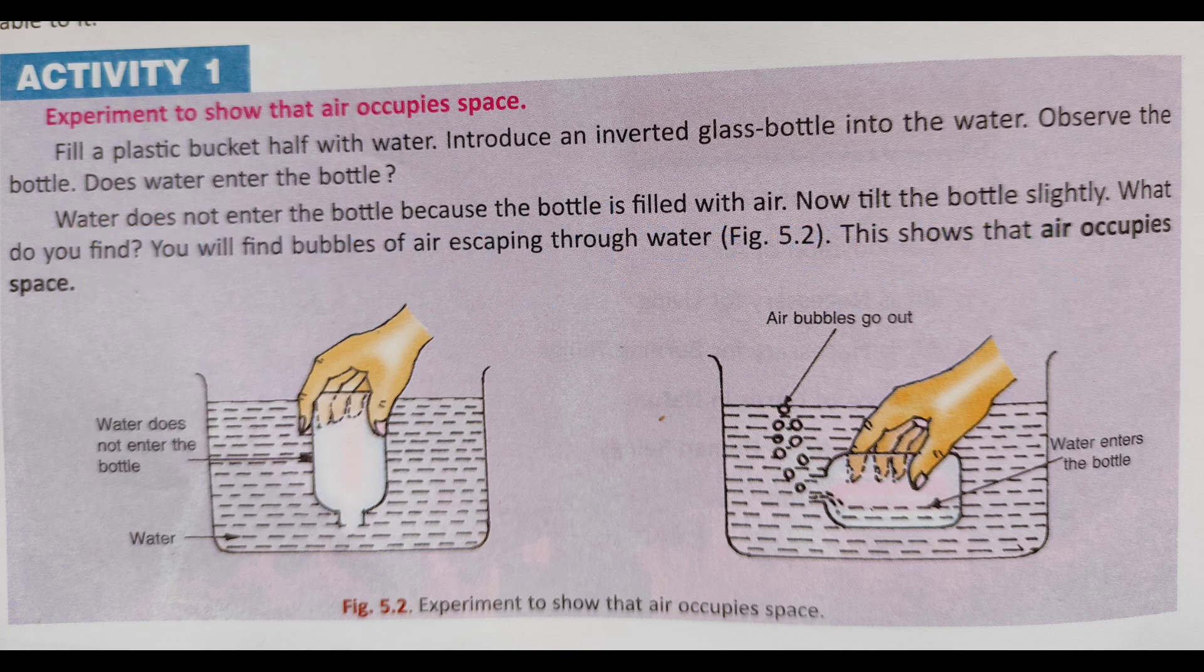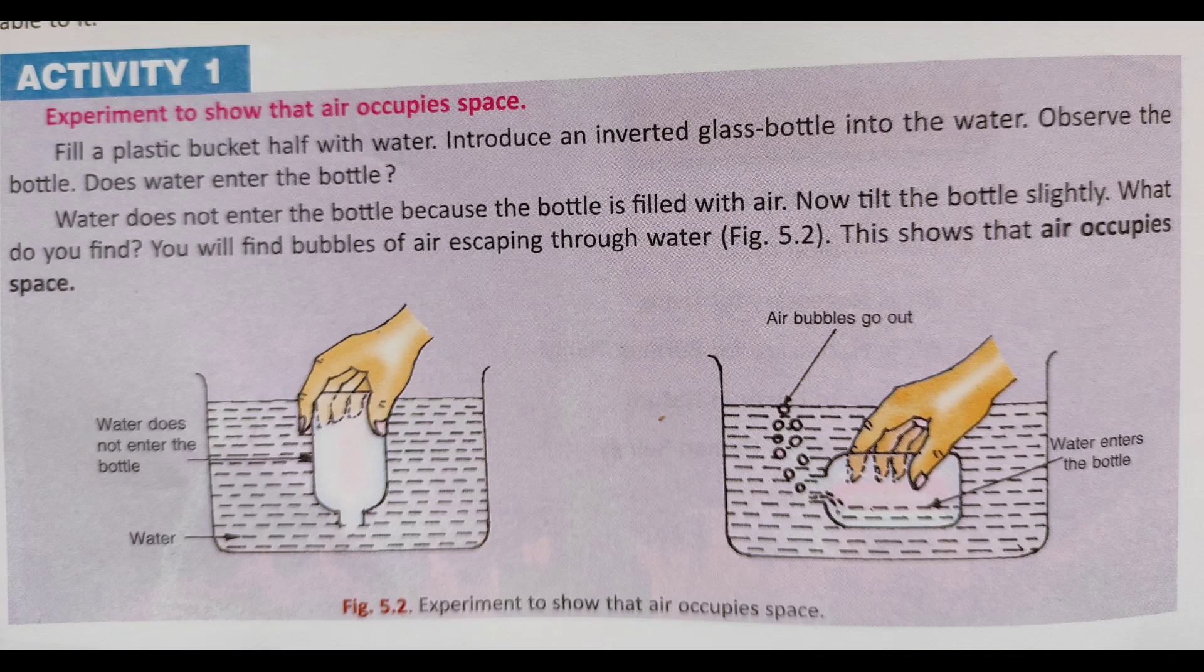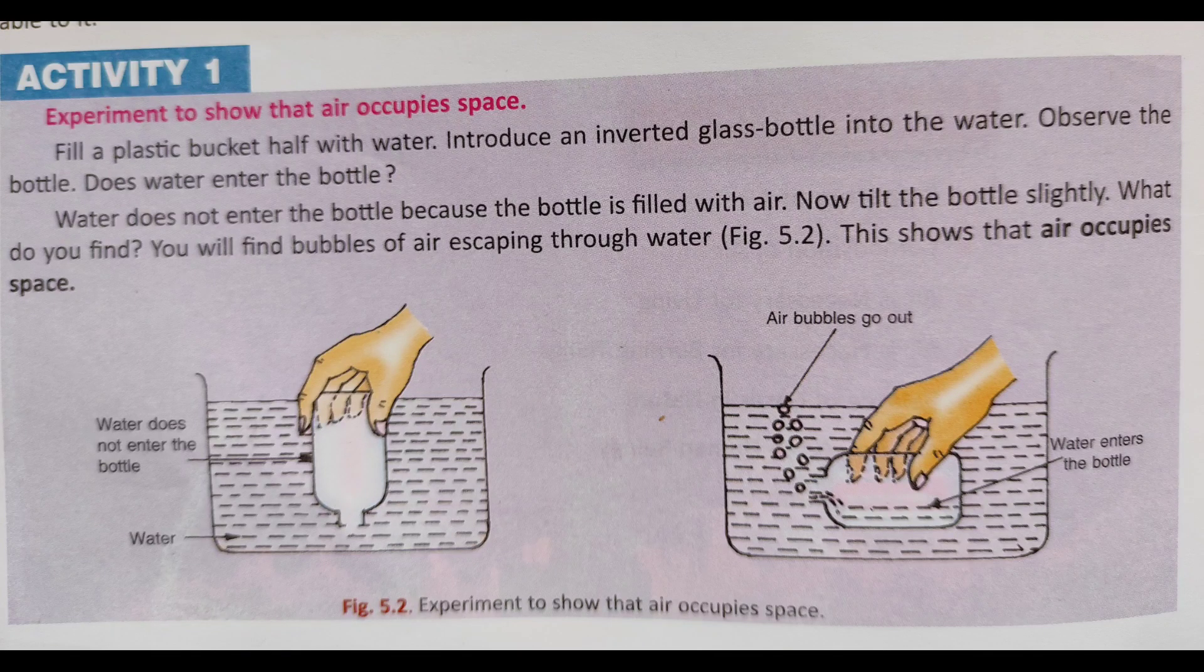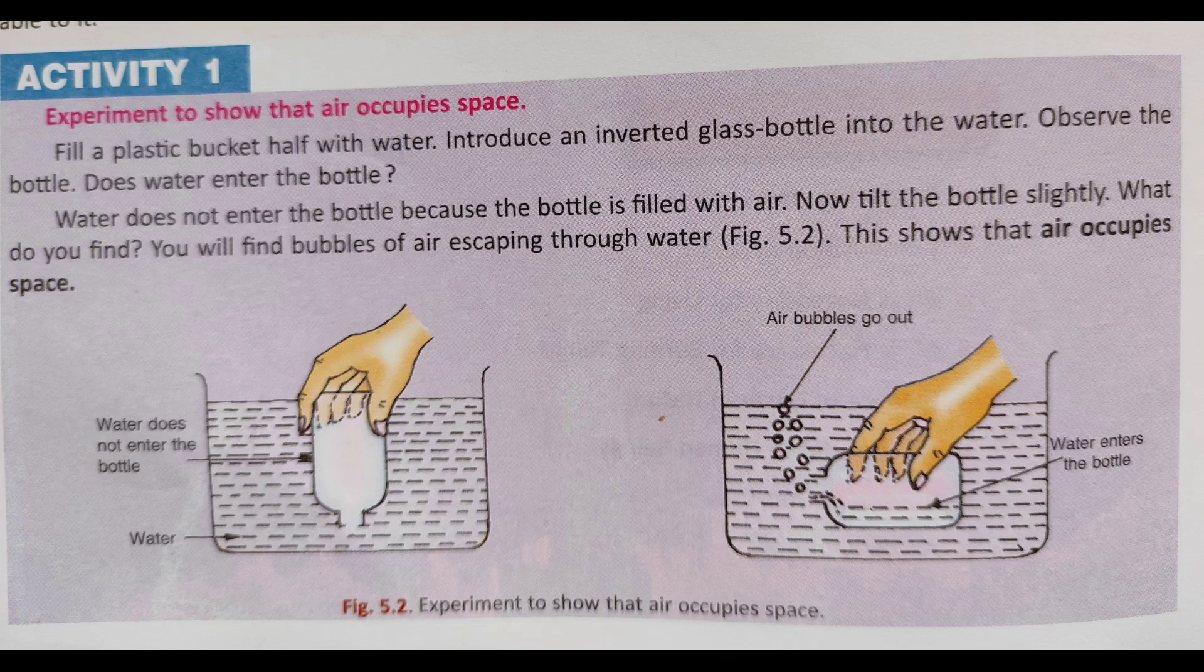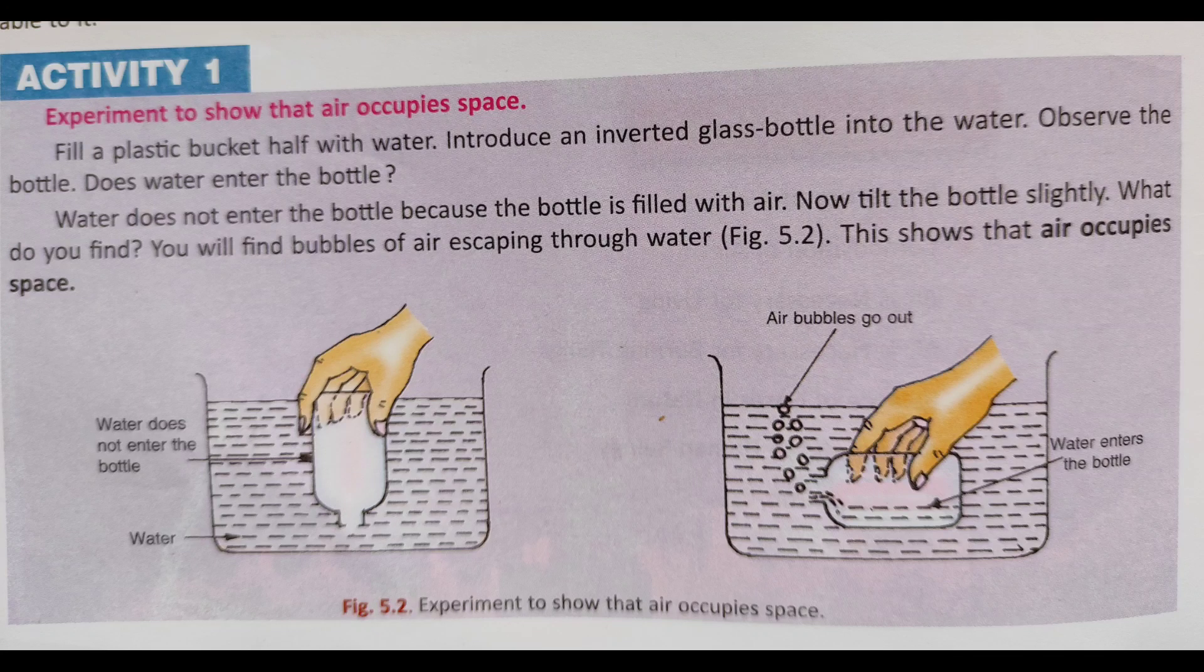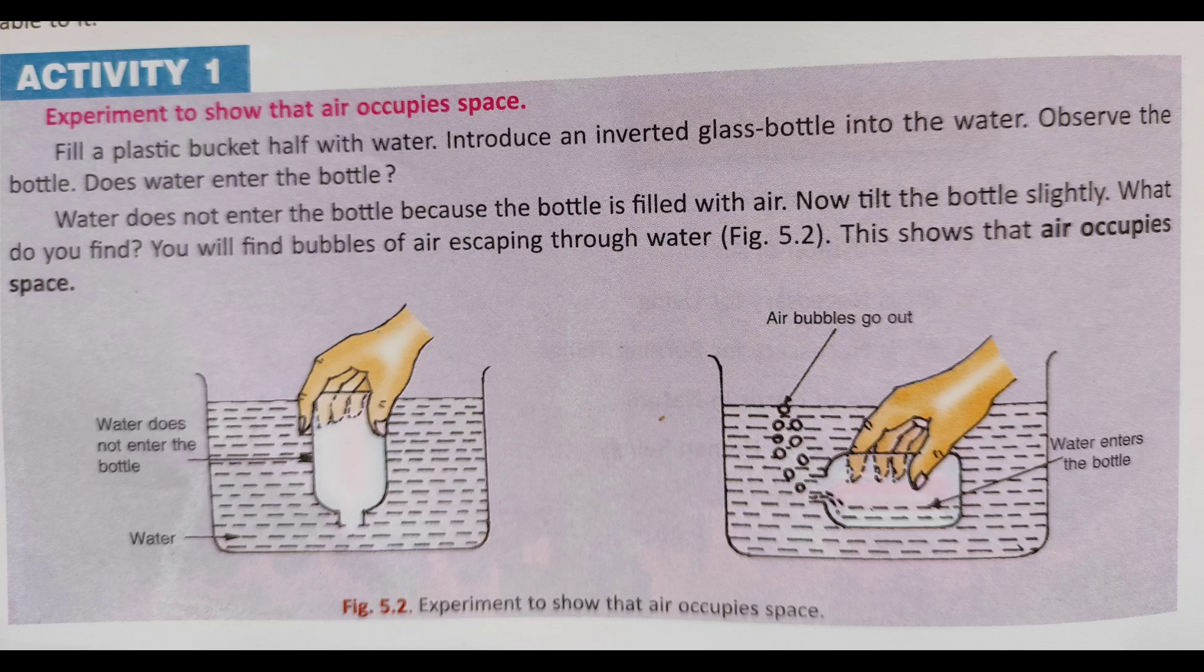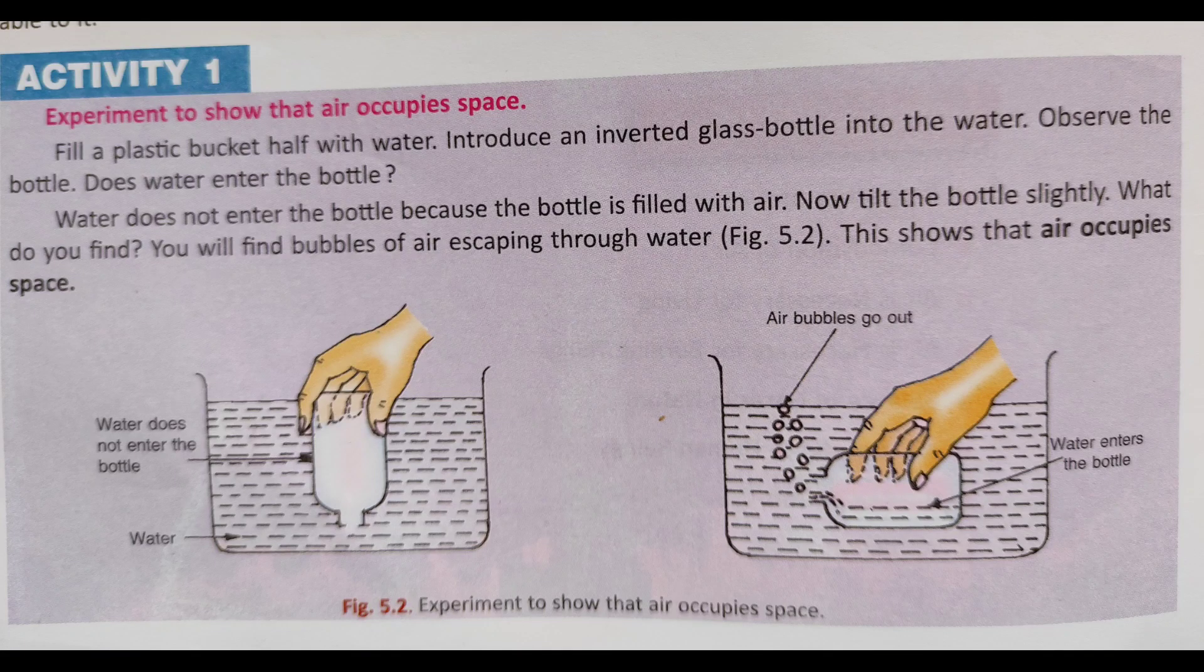With a simple experiment. Here is the experiment to show that air occupies space. Fill a plastic bucket half with water. Introduce an inverted glass bottle into the water. Observe the bottle. Does the water enter the bottle? Water does not enter the bottle because the bottle is filled with air. Now tilt the bottle slightly.